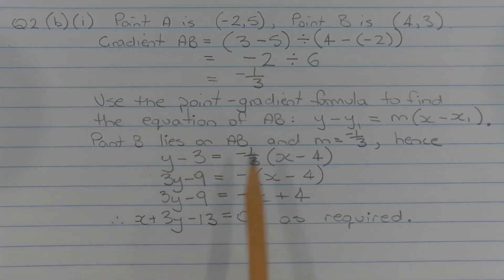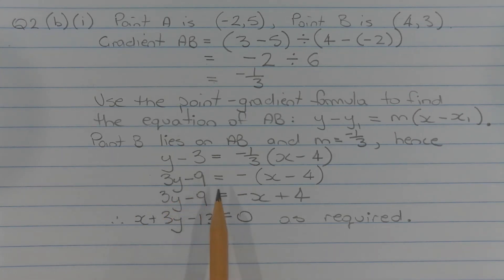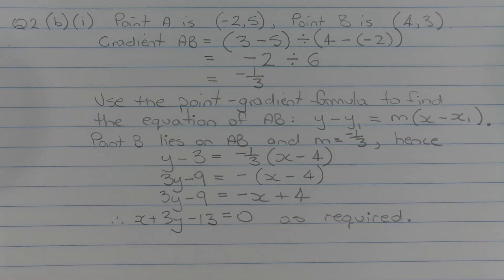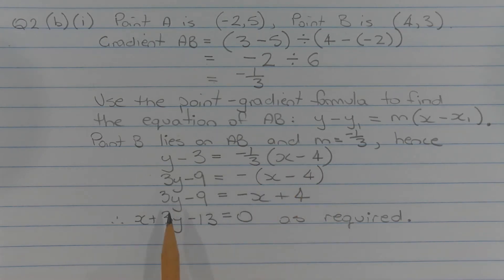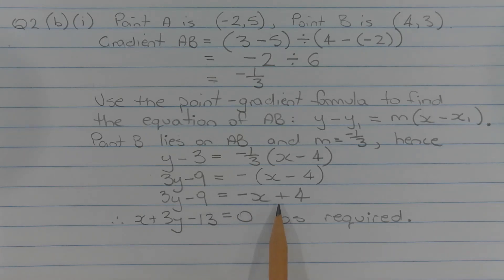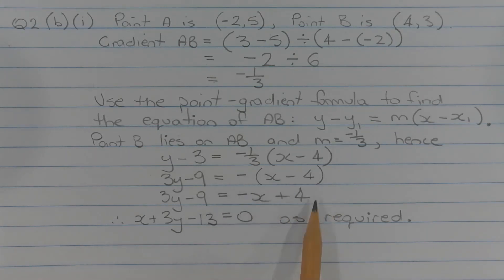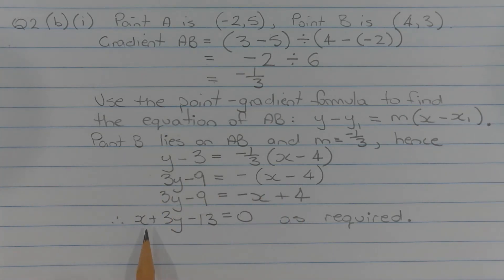Multiplying both sides by 3, we get 3y minus 9 equals negative (x minus 4). Expanding the brackets on the right-hand side, we get 3y minus 9 equals negative x plus 4. Moving the two terms on the right-hand side over to the left-hand side, we get x plus 3y minus 13 equals 0, as required.